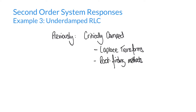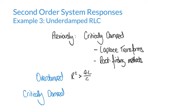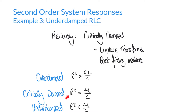Recall the conditions for over-damped, critically damped, and under-damped that we've mentioned previously. In our previous examples, we looked at critically damped cases where R squared equals 4L over C. But in this example, we're going to look at an under-damped case where R squared is less than 4L over C.